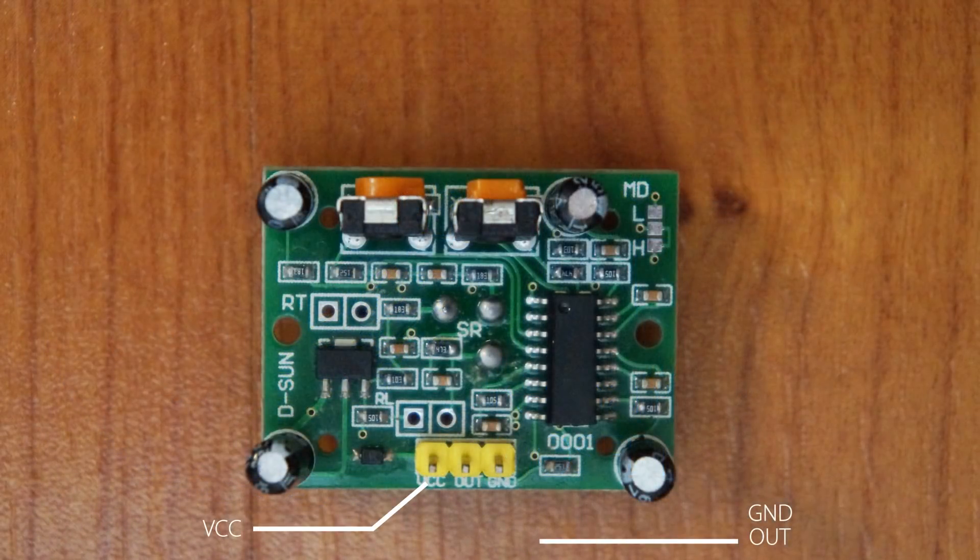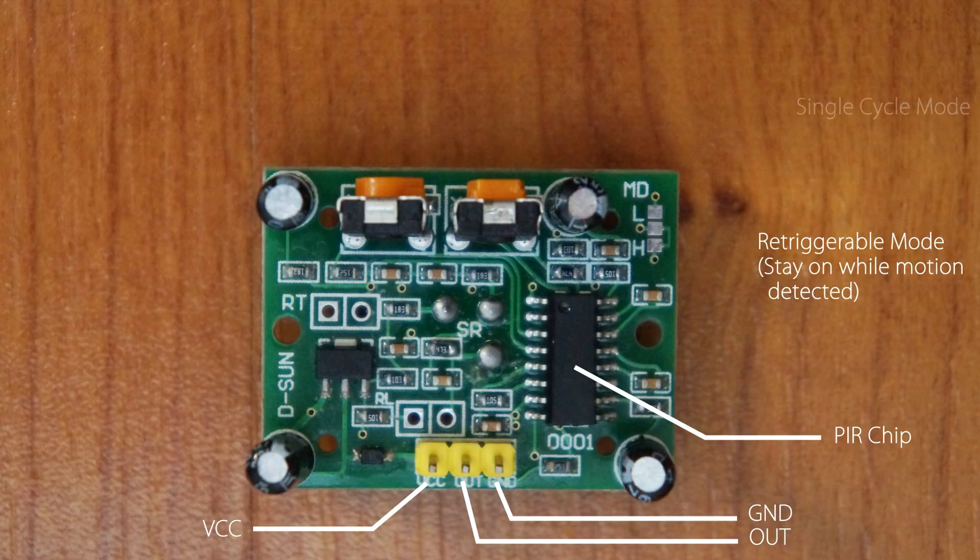On the bottom you see we have the voltage, output, and ground. The output goes to the MOSFET. Next we have the PIR chip that handles all the processing for the chip. Now there's two modes: single mode and retriggerable mode.